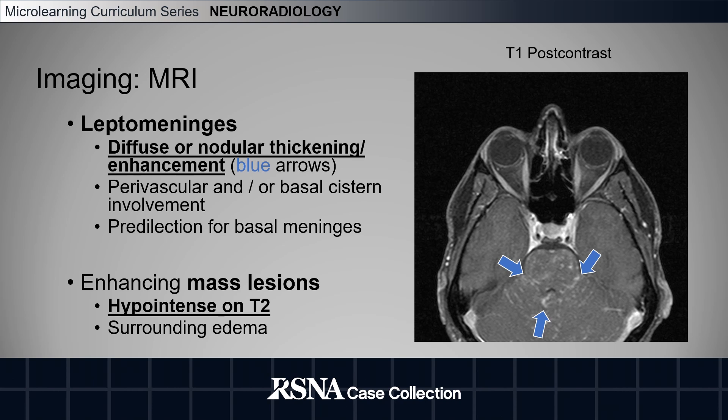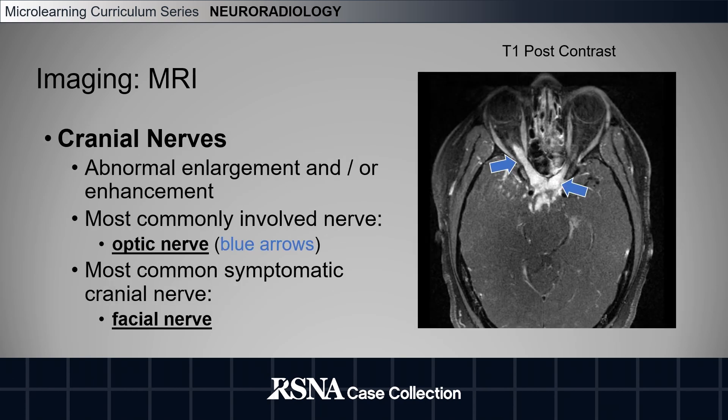Other MRI findings include enhancing mass lesions, which appear hypointense on T2 sequences with surrounding edema. Here we have a post-contrast MRI showing abnormal enlargement and enhancement of the optic nerve, which is the most commonly involved cranial nerve in intracranial sarcoidosis. However, the most common symptomatic cranial nerve is the facial nerve.